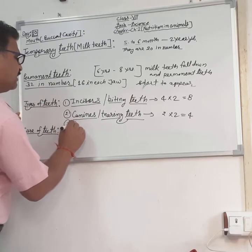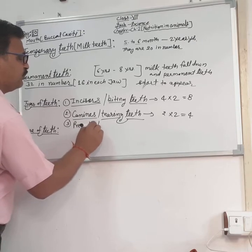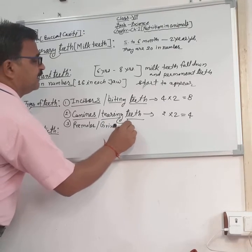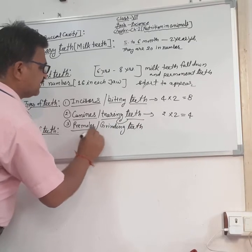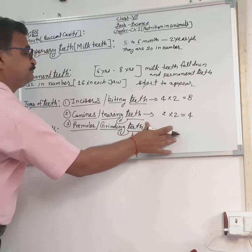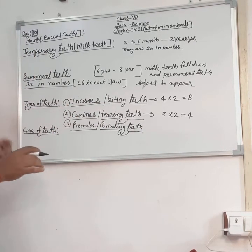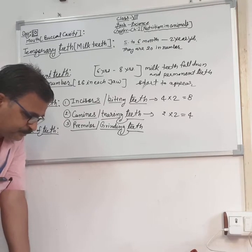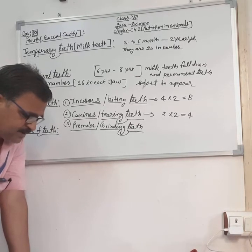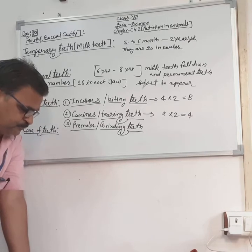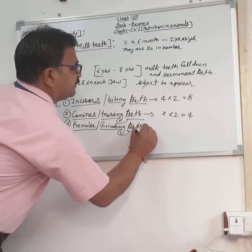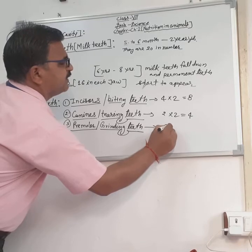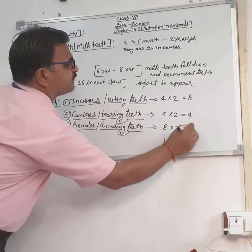The third type is premolar teeth. Premolar's other name is grinding teeth — for grinding things. After incisors and canines have done their work, premolar teeth are available for grinding. The next two teeth on each side of the jaw are premolars. They are eight in number.